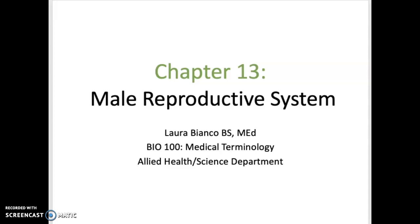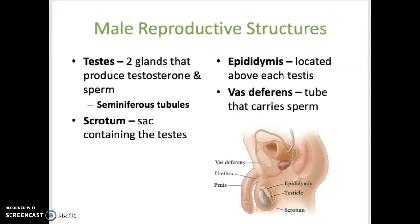This is a mini lecture for the male reproductive system, and we will start by reviewing the major male reproductive structures. There are two testes, which are glands that produce testosterone and sperm. Within the testes are seminiferous tubules, which are small, coiled-up tubes that produce sperm.